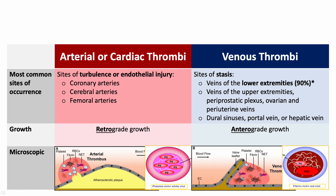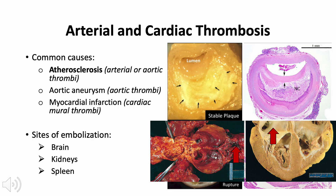Arterial or cardiac thrombi usually begin at sites of turbulence or endothelial injury and are commonly seen in coronary, cerebral, and femoral arteries in decreasing frequency. Venous thrombi start at sites of stasis, usually in the veins of the lower extremities. Common causes of arterial and cardiac thrombosis include atherosclerosis, aortic aneurysm, and myocardial infarction (cardiac mural thrombi). Sites of embolization include the brain, kidneys, and spleen.